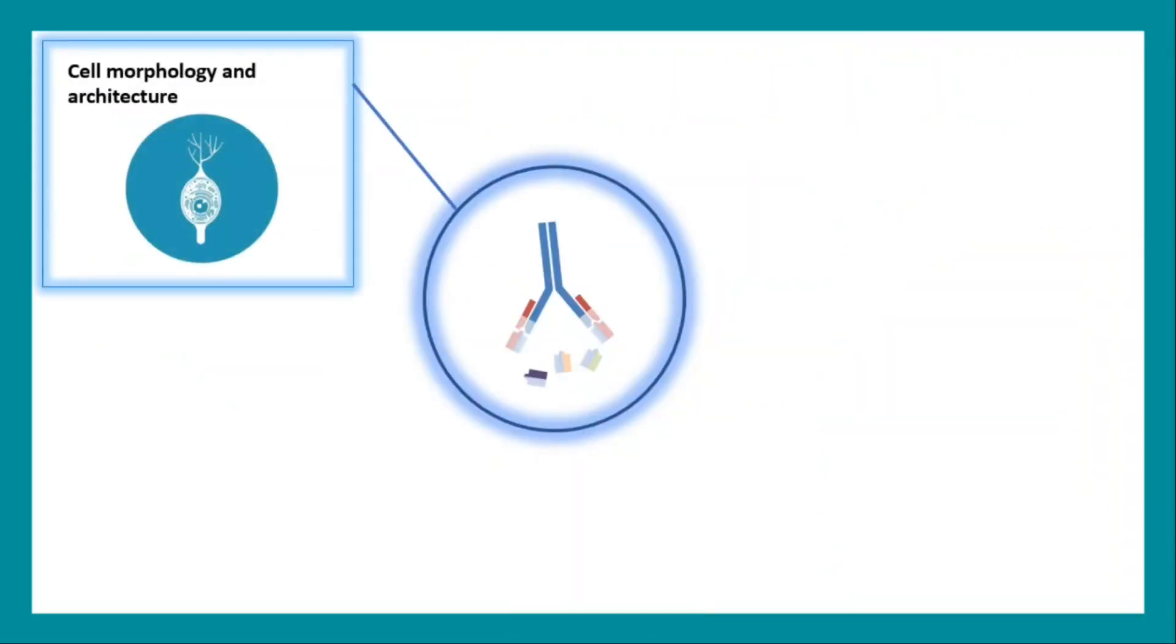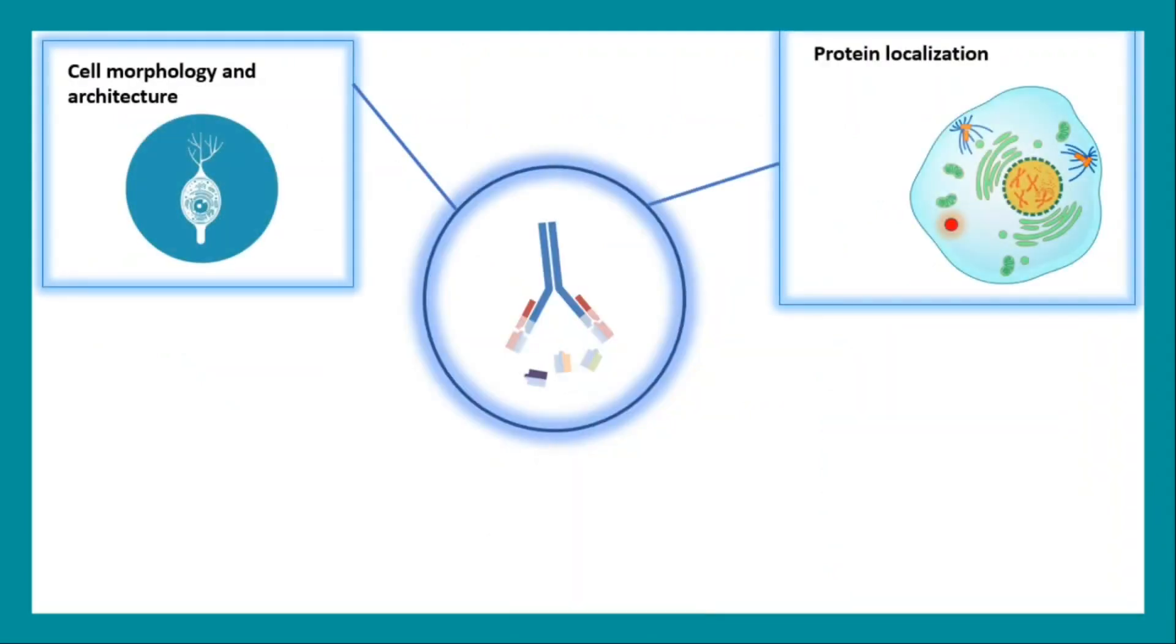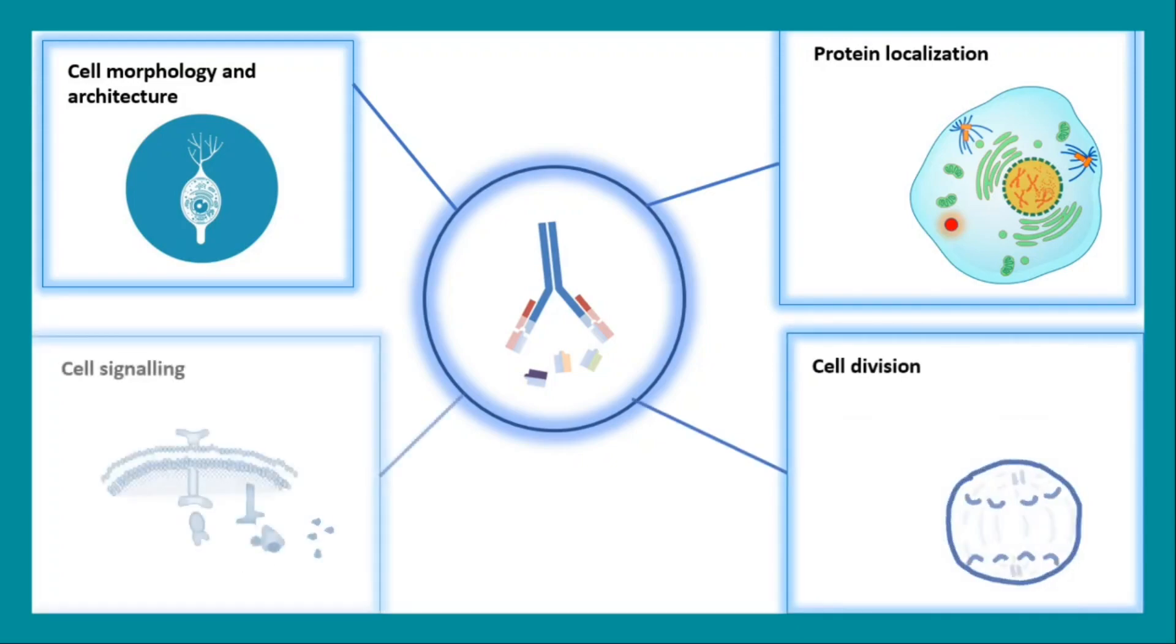Now immunohistochemistry is used to study cell morphology and architecture, protein localization, cell division and cell signaling.